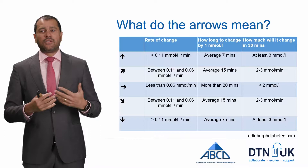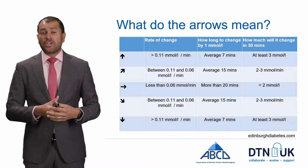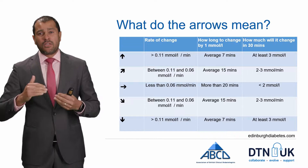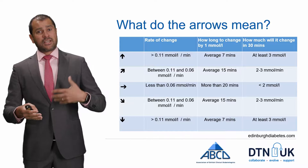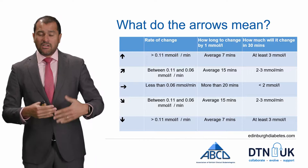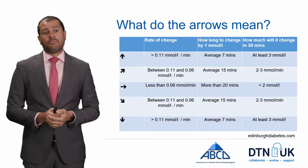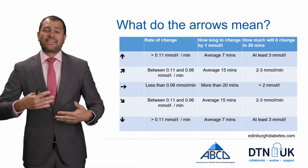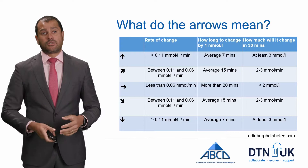If you've got the oblique downward arrow, the glucose is changing by between 0.06 and 0.11 mmol per minute, so you're going to go down by one over about 15 minutes. In half an hour you're going to be between two and three mmol lower. If you've got the arrow going straight down, you're falling rapidly — more than 0.11 mmol per minute — and in the next half hour you're going to drop by at least three, on average about five to six mmol per litre.